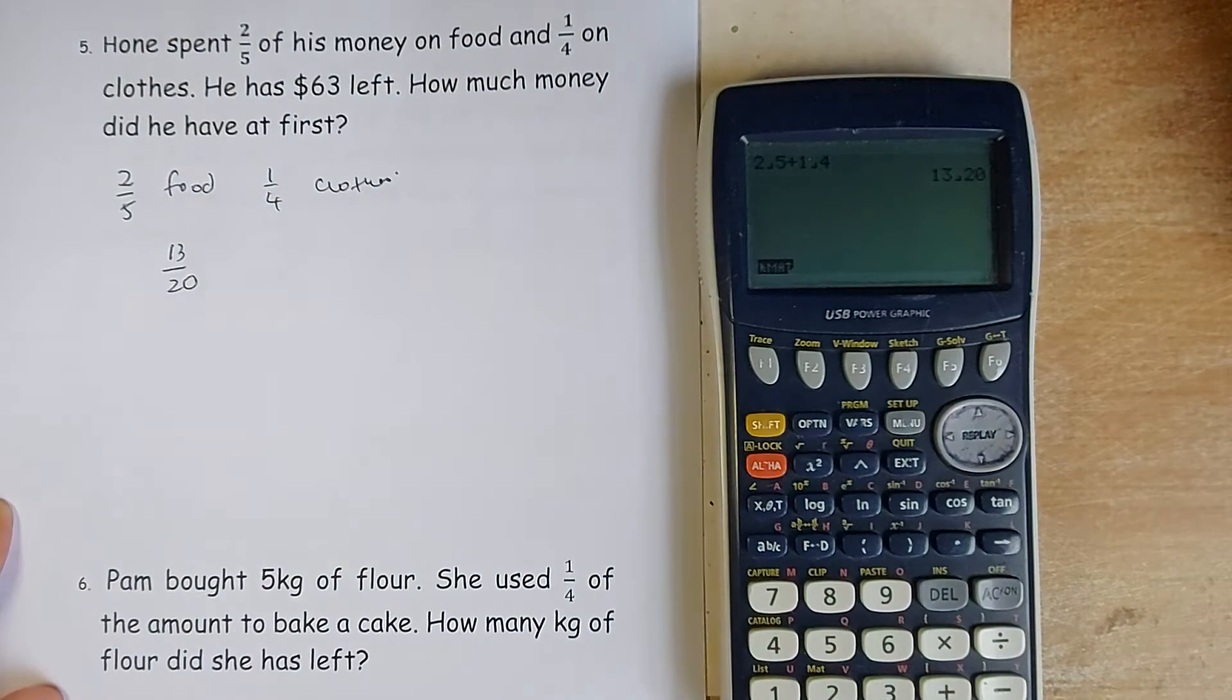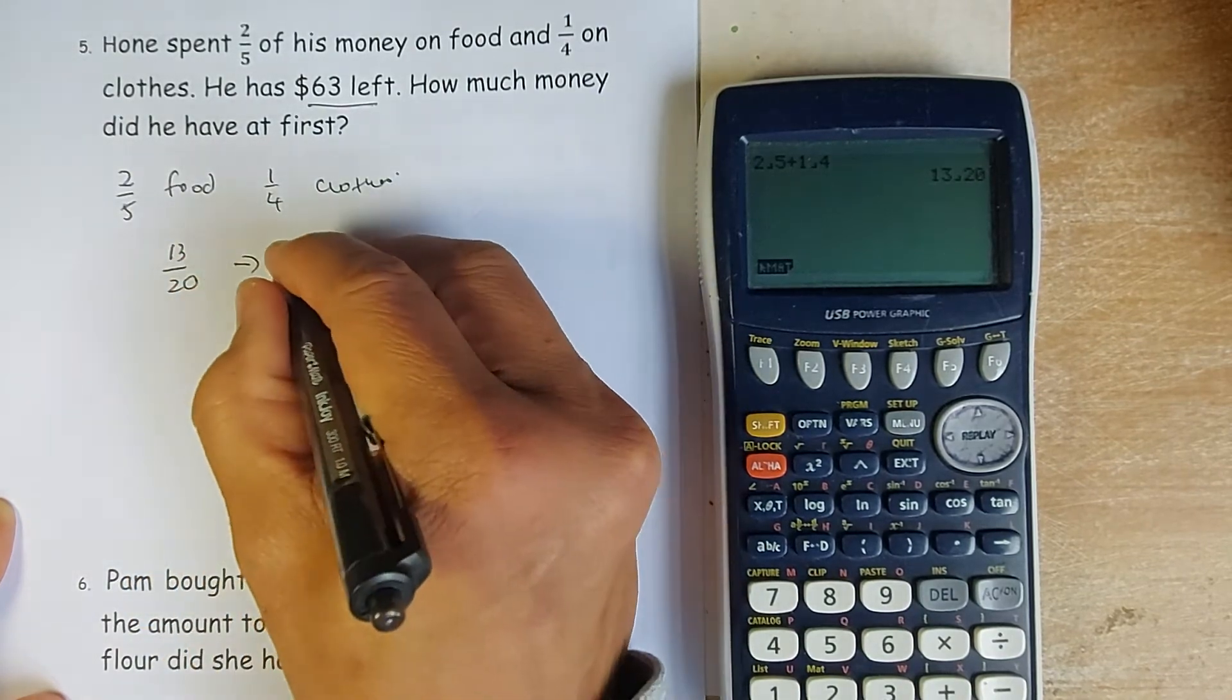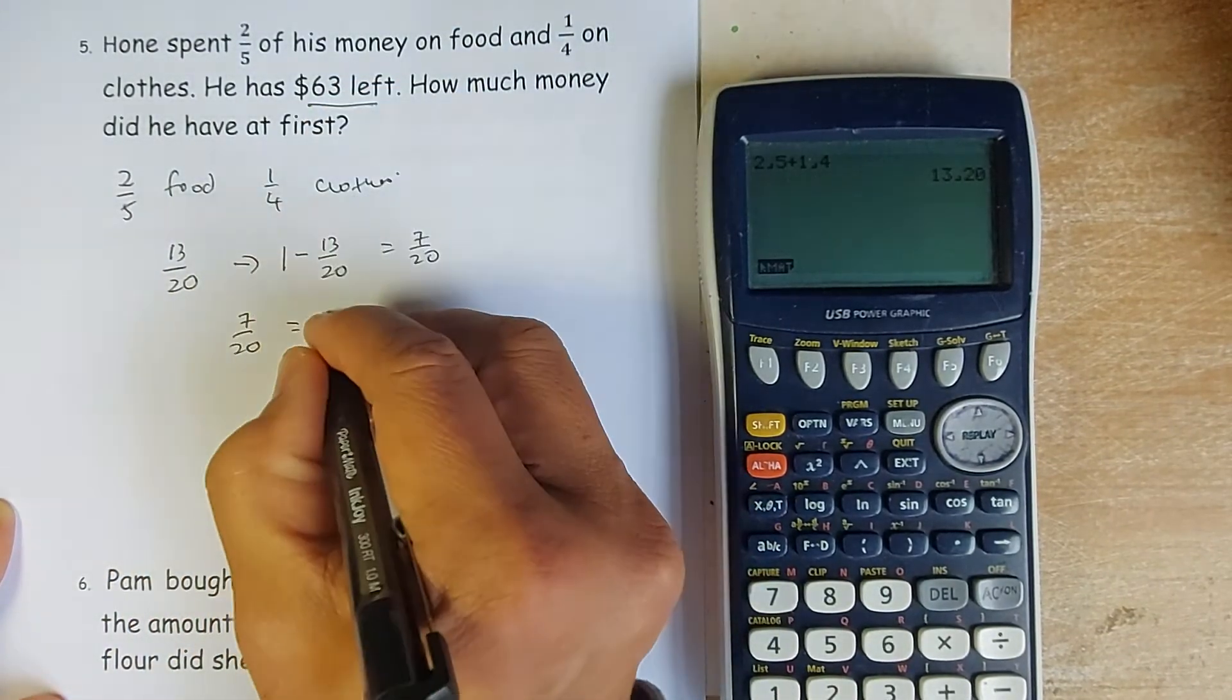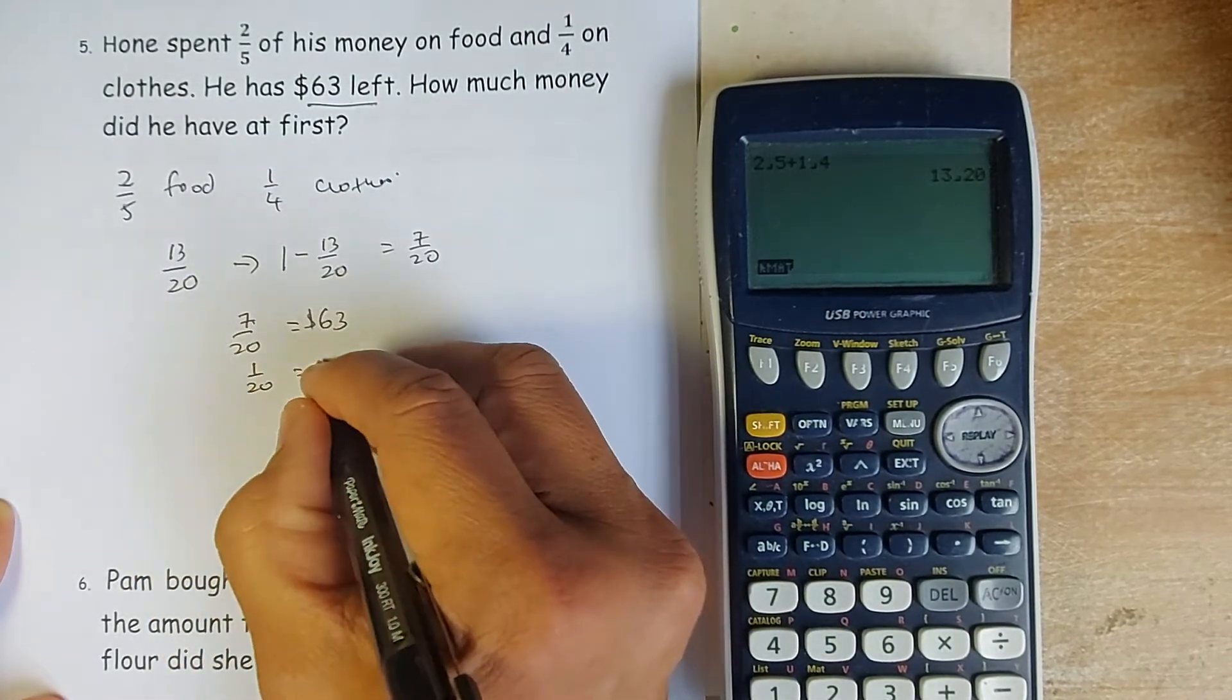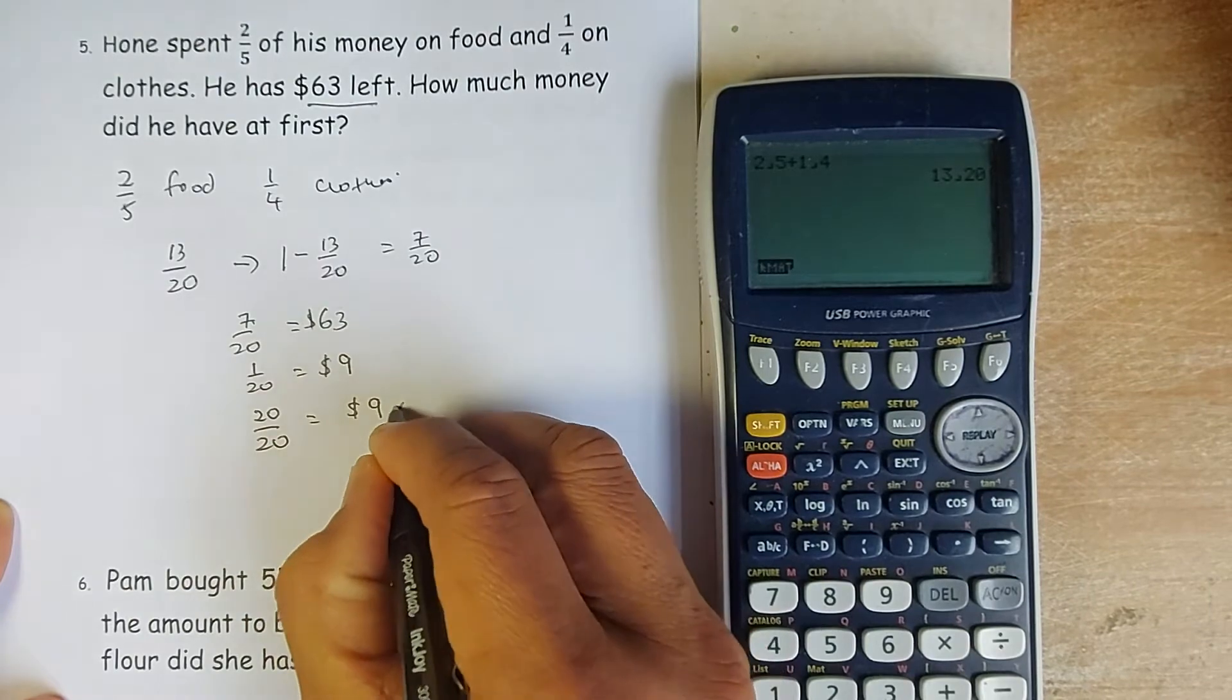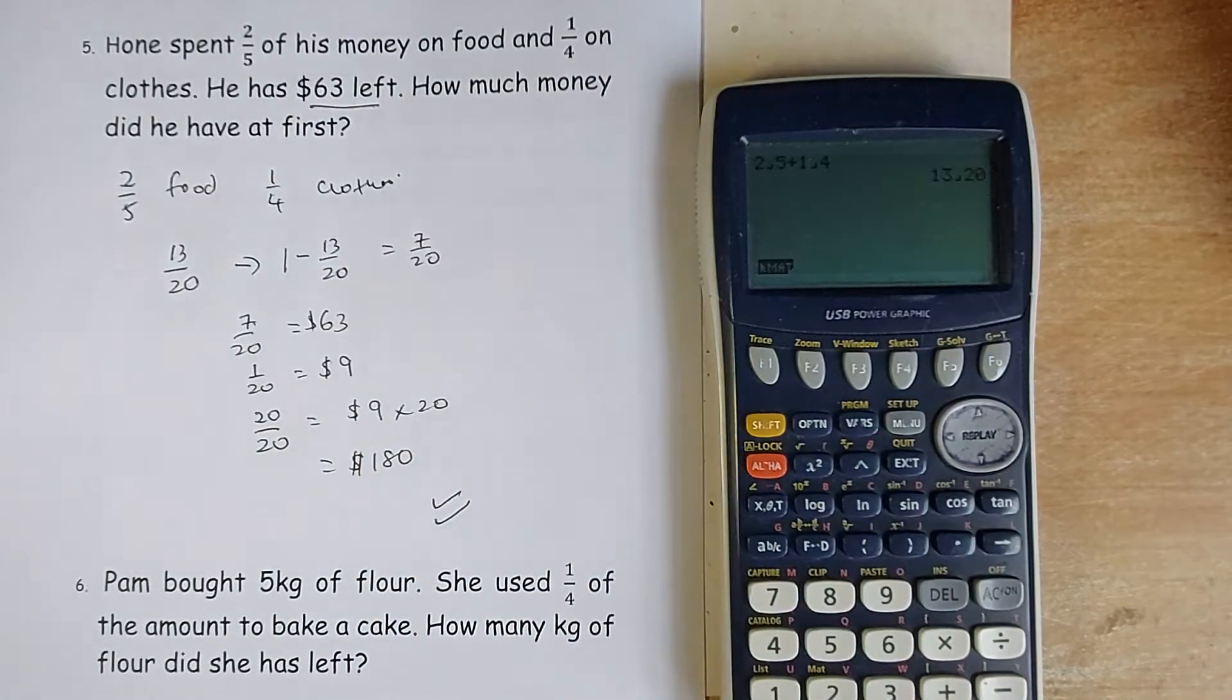13 over 20 on both food and clothes. He left, he is left with $63 left. So when he spent 13 over 20, he is 1 minus 13 over 20. So he is left with 7 over 20. So 7 over 20 is equal to $63. So 1 over 20 is equal to 63 divided by 7, which is going to be $9. Because the whole thing, the initial amount is 20 over 20, so it's going to be $9 times 20, and the answer is $180. And that is 2 marks in the exam.